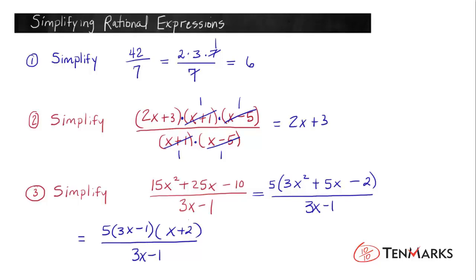We have the 5 times the 3x minus 1 times the x plus 2. And that means that we can compare factors at this point. There's a common factor of 3x minus 1 both in the numerator and the denominator. So we can reduce that. We can divide it by itself and that gives a 1 on top or a 1 on bottom.